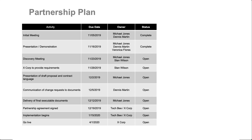When you first create the partnership plan, you're going to create this on your own. You're going to make some assumptions, and these are not only steps that you have to go through on your side, but these are steps that you think they will have to go through — because it's a partnership plan, so both parties are in this plan. It's not just you, the salesperson. You're going to put dates, owners, and a column for the status.